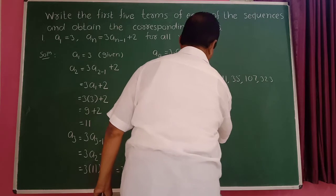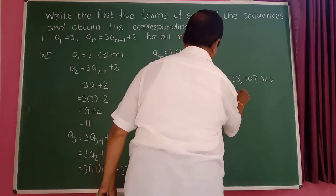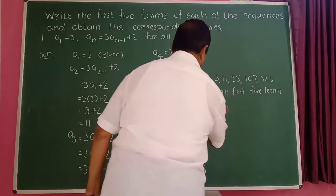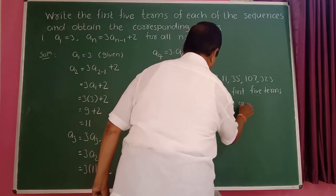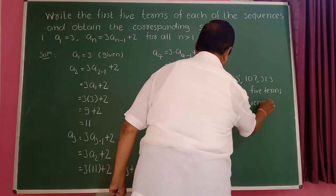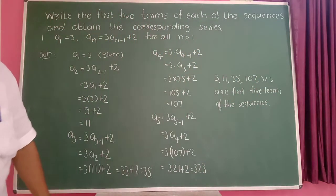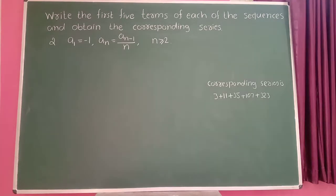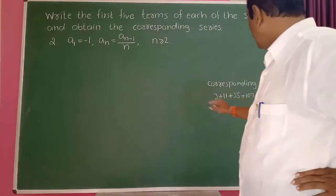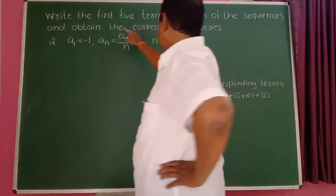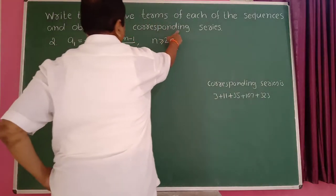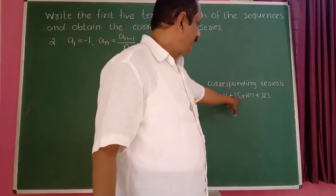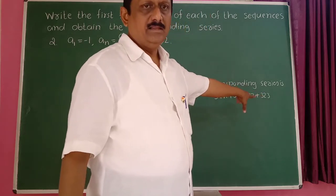The first 5 terms of the sequence are 3, 11, 35, 107, and 323. The corresponding series is 3 plus 11 plus 35 plus 107 plus 323.